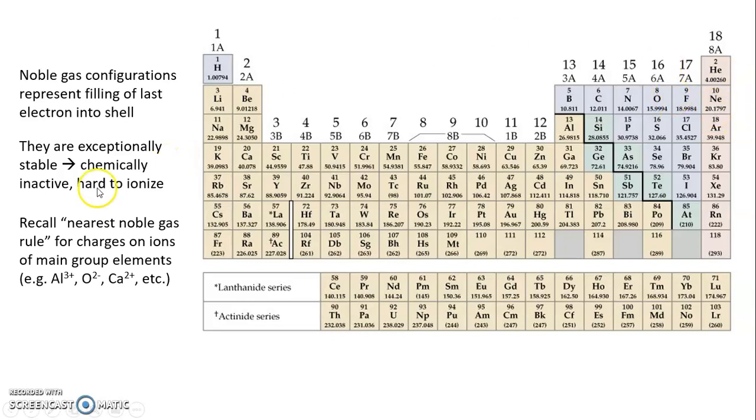You may also recall that the nearest noble gas rule was what we used for determining the charges on ions of main group elements. Aluminum, which is in group 13, loses three electrons so that it gets to the same number of electrons as neon. And now we can appreciate why that might be so. By losing those three electrons, it attains the same electron configuration as neon and gets that additional stability of the noble gas configuration. Oxygen can add two electrons and get to neon. So there is some benefit to having that noble gas configuration. That's the reason behind the nearest noble gas rule for charges on ions.